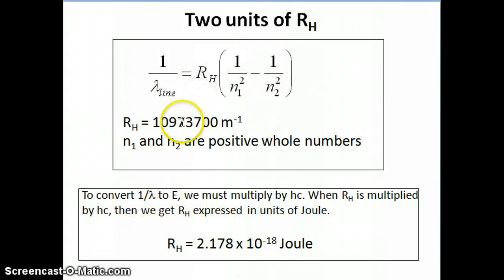You can convert the RH value from wavelength to energy if you remember that this is one over wavelength. And if you remember that energy is HC over lambda, HC over lambda is equal to the energy of a photon. So if I were to take this number and multiply it by HC, Planck's constant times the speed of light, what I get is another number, which is 2.178 or sometimes written as 2.18 times 10 to the minus 18.